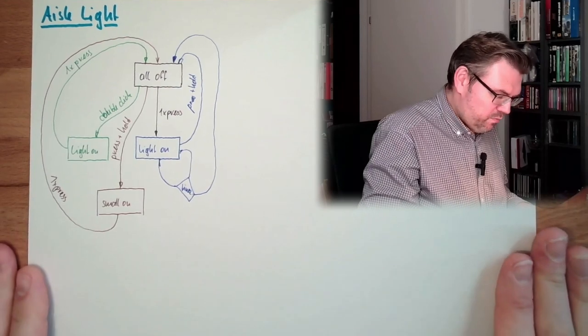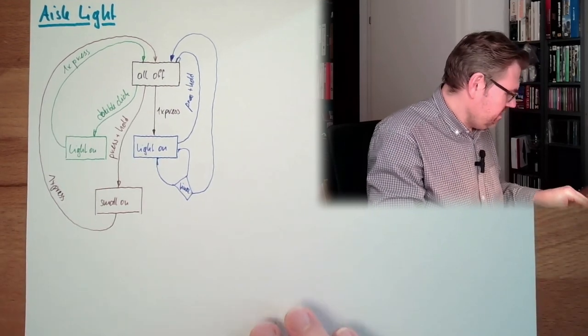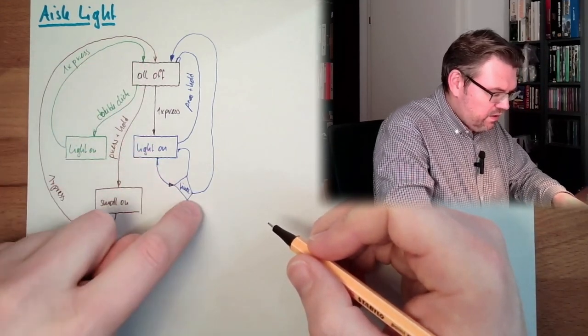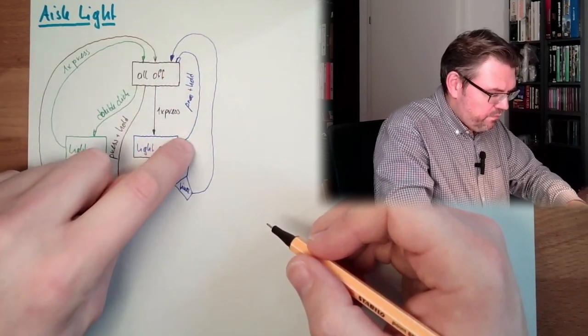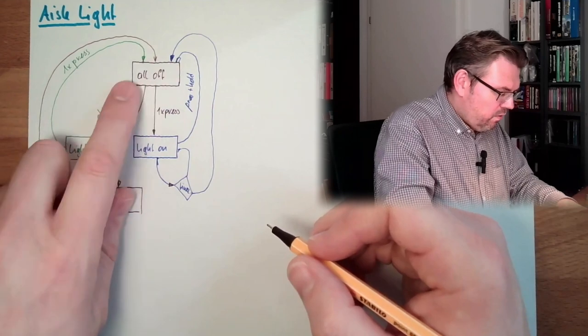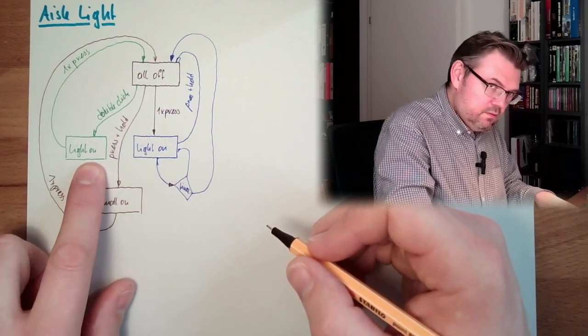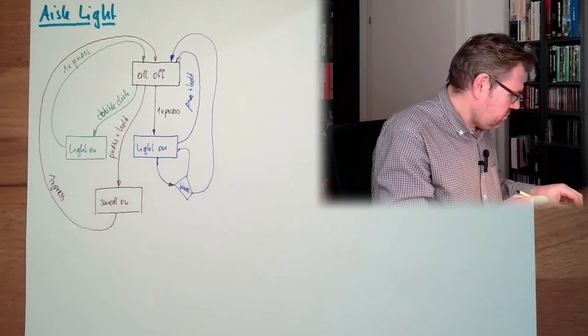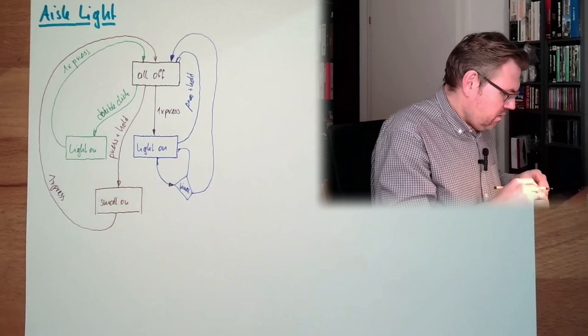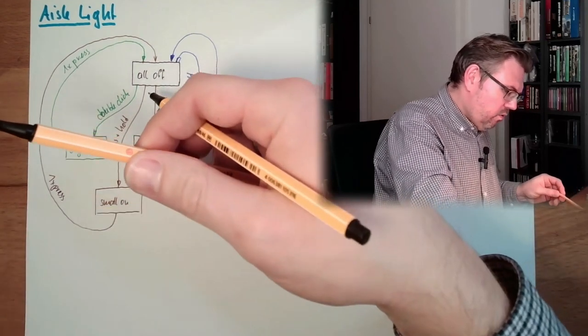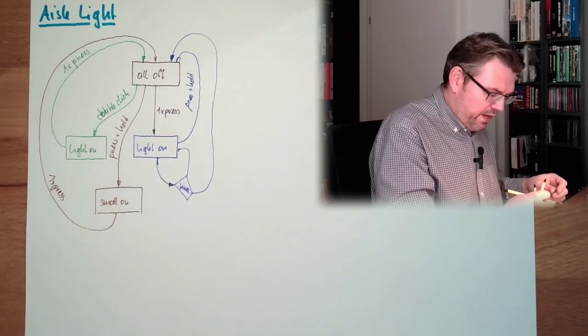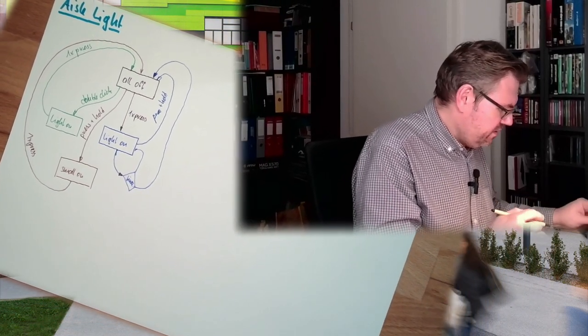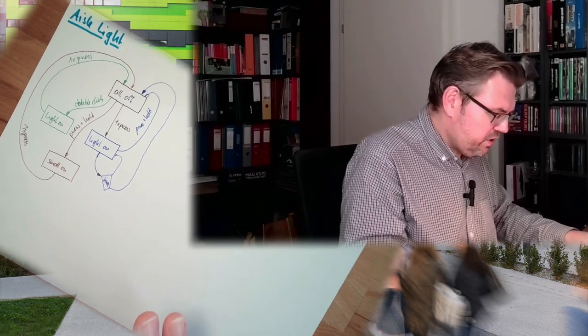This is what we should see. So all off, one time press, lights on, time off, press and hold off. All off, double click, lights on, and only in case one time we press one time, all off. What else, all off, press and hold, only the small lights on, and simply click to turn them off again. This is the logic, this we want to have.